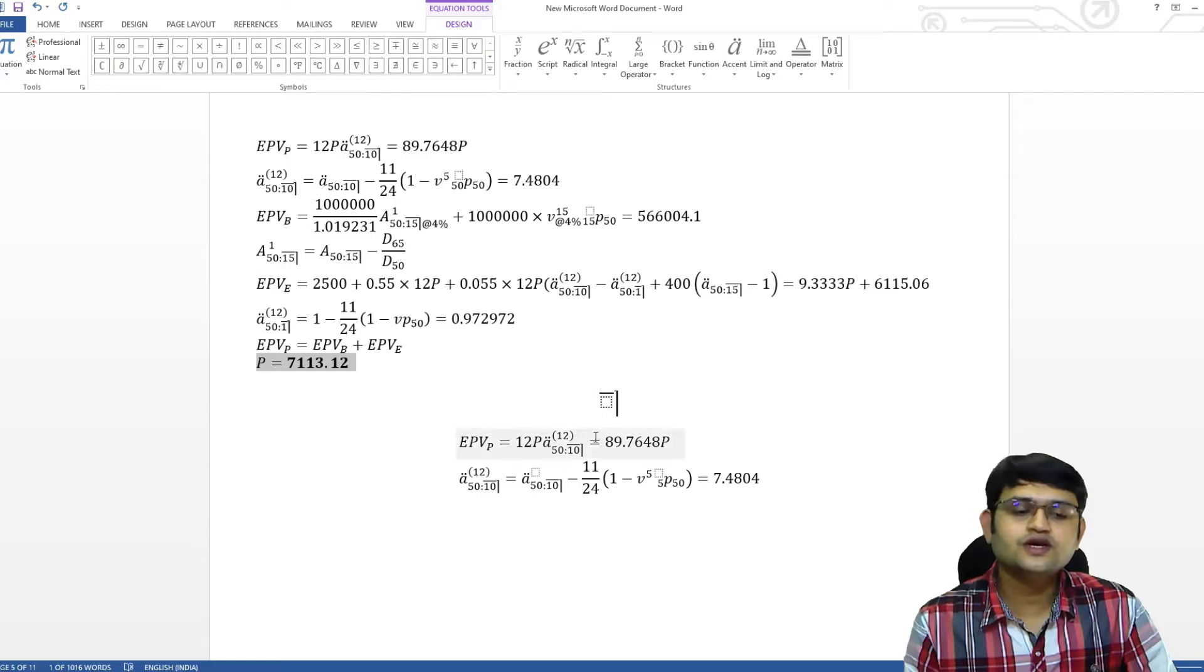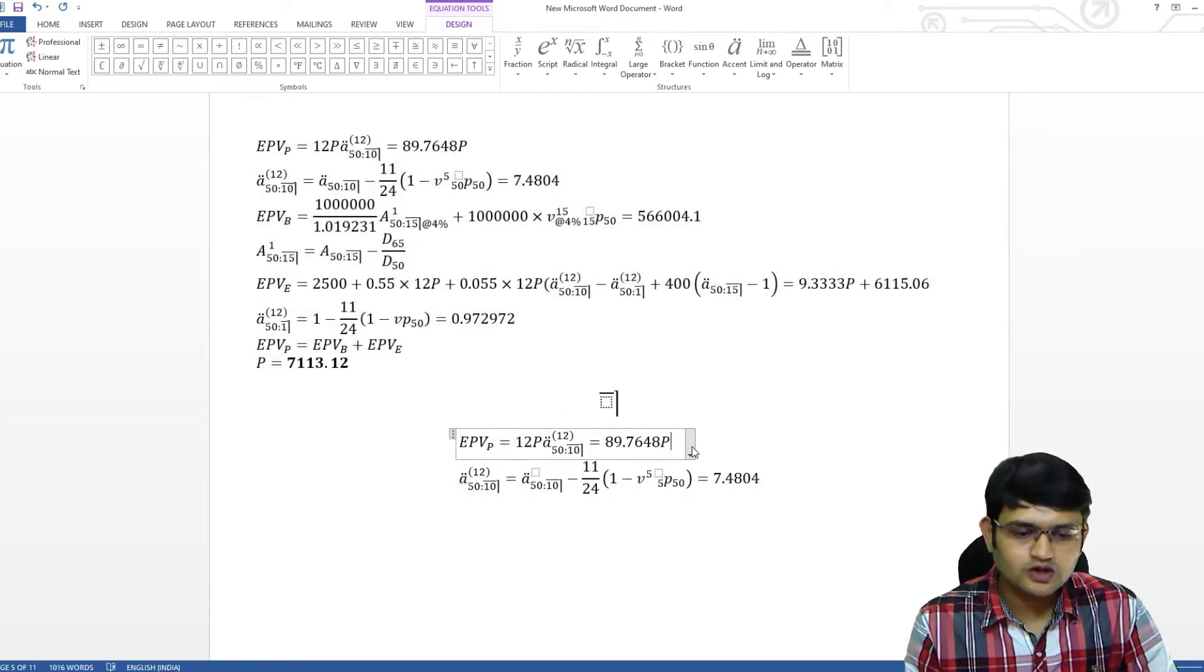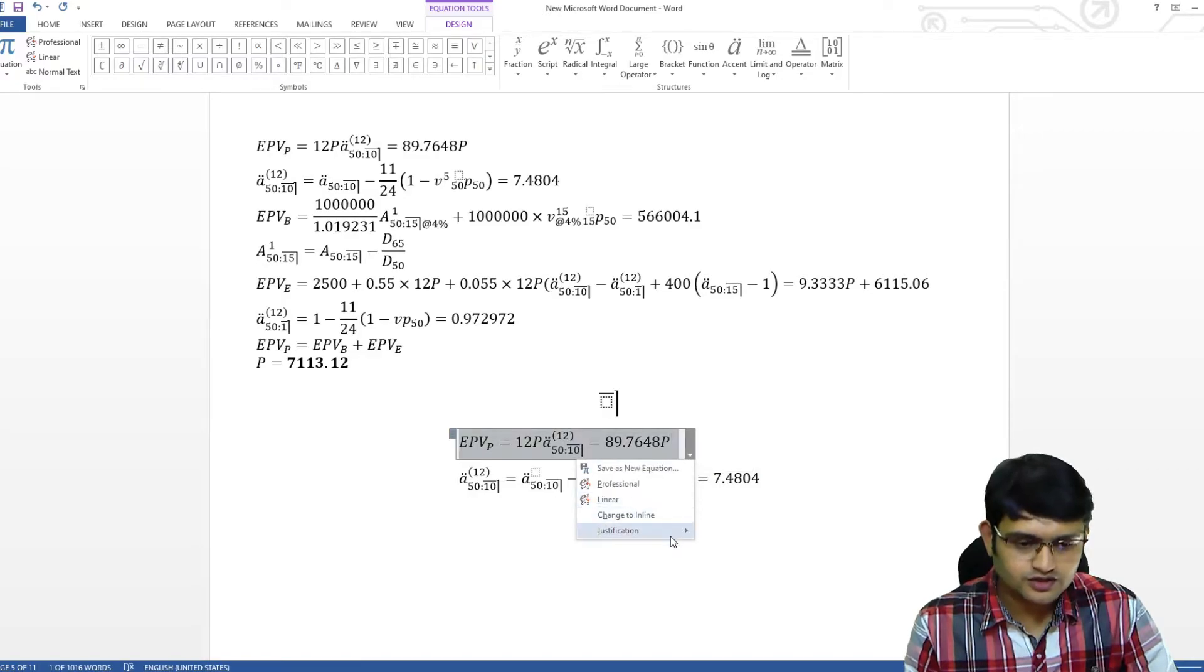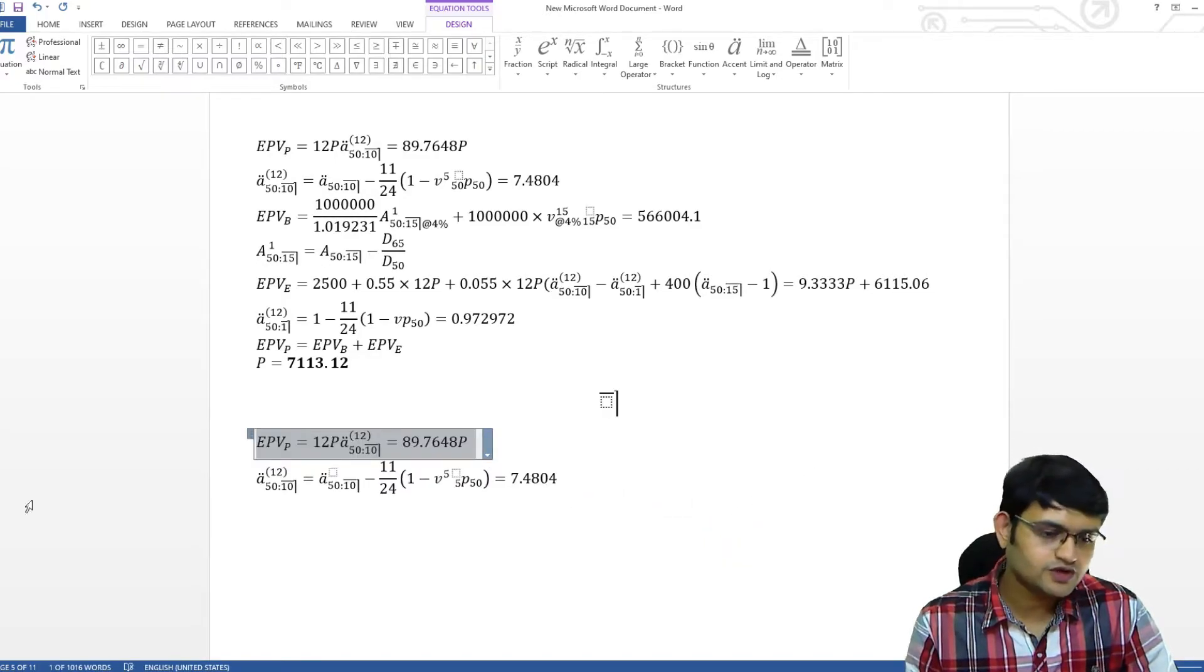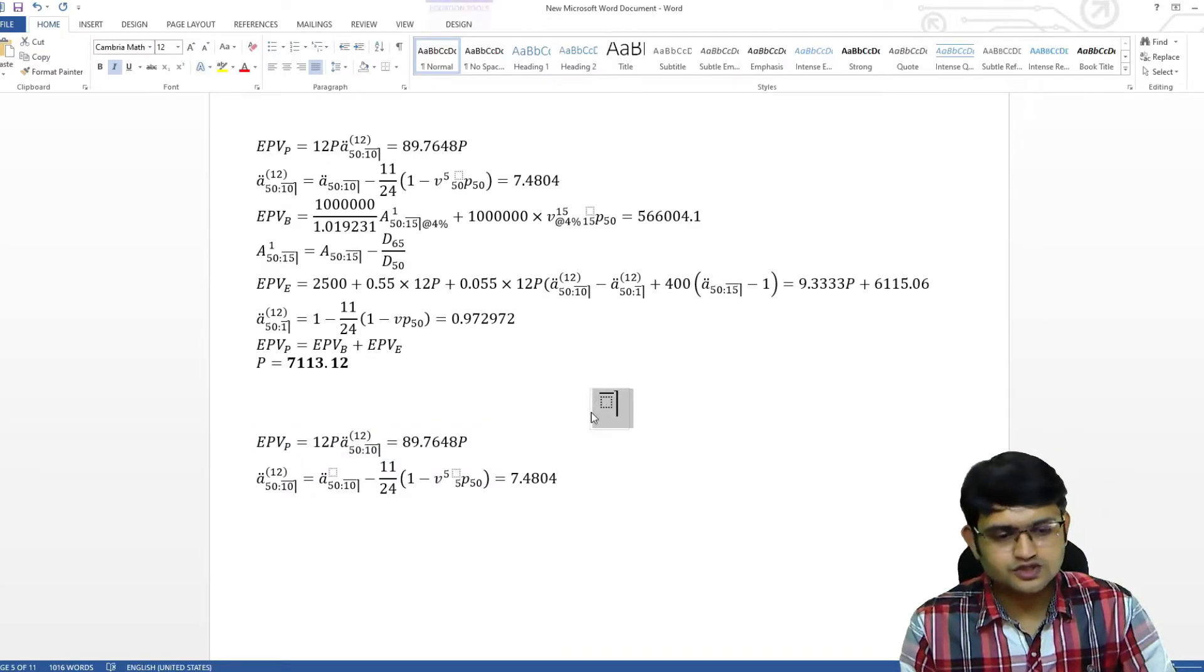You do not have to write every single equation. Now, to justify it on left side, all you have to do is, click on this and justification left and you can see all the equation go to left. Then after the question is done, just remove this or copy it for the next question.